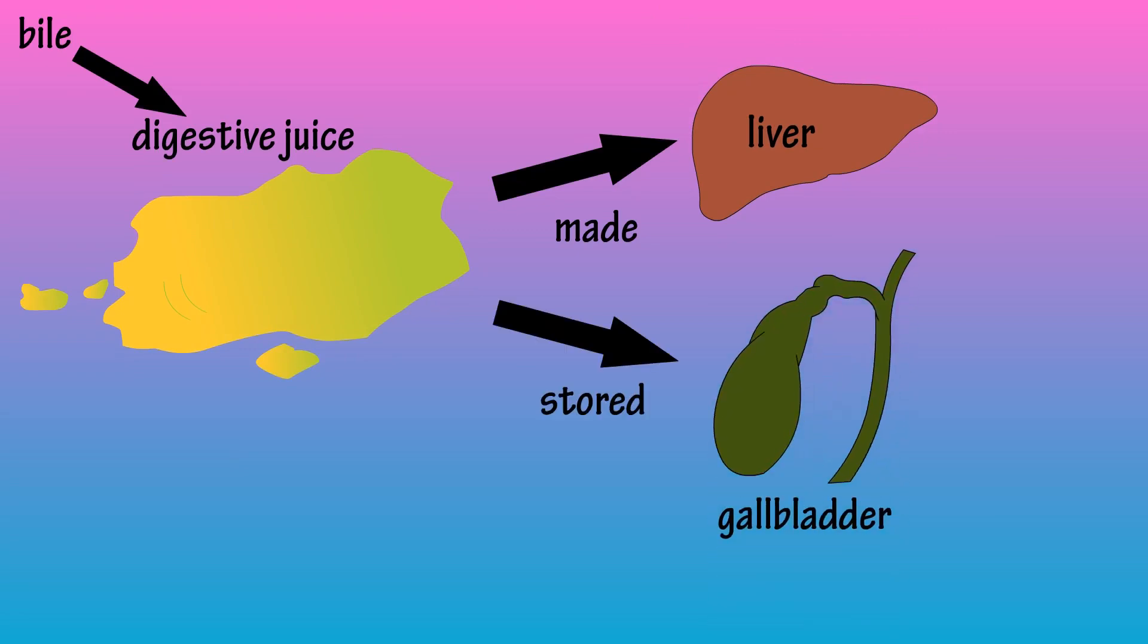What is bile? Bile is a digestive juice that is produced in the liver and stored in the gall bladder.